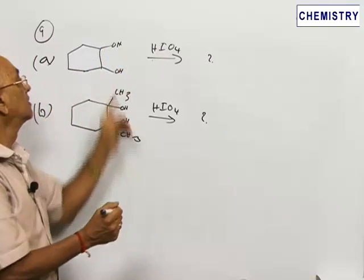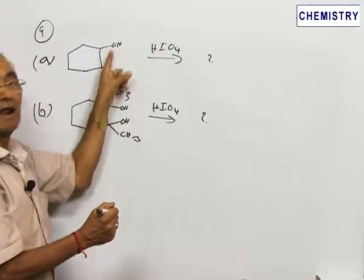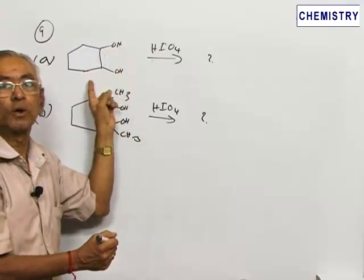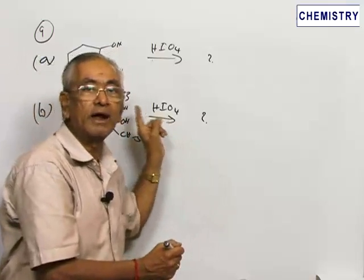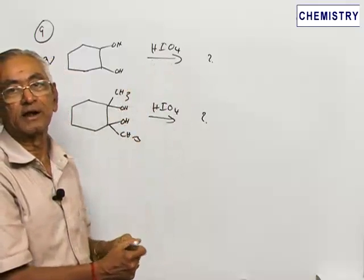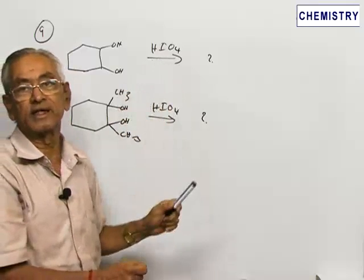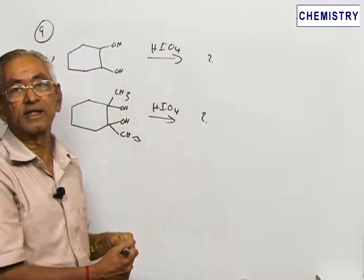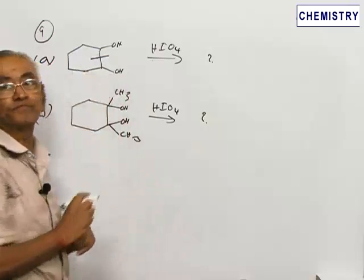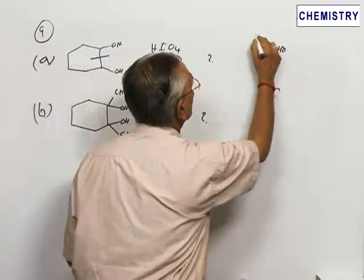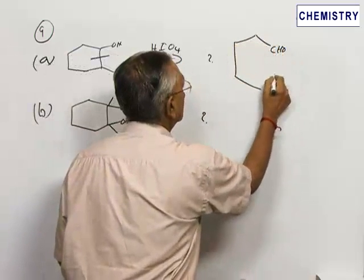What happens when a vicinal diol like this—which is actually 1,2-dihydroxycyclohexane—is treated with periodic acid? Periodic acid, HIO4, is a very powerful oxidizing agent and this diol gets cleaved here. Therefore, we get an aldehyde. This is the aldehyde that we get.